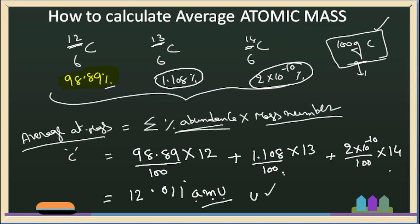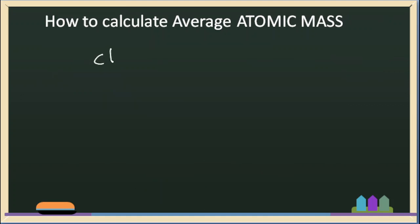AMU stands for atomic mass units — these are the units for atomic mass. In this example, we have a lot of clarity on carbon. Next, we will calculate the atomic mass of chlorine. Chlorine has atomic number 17, and two isotopes: Cl-35 and Cl-37. The relative abundance of Cl-35 is 75%.